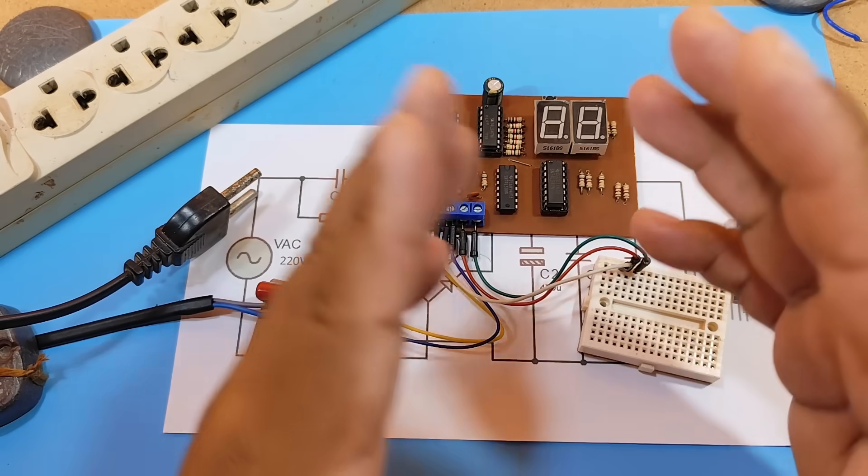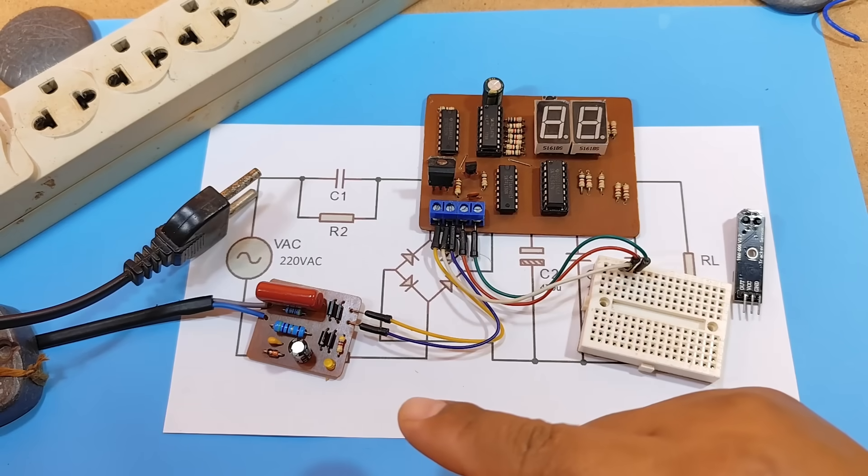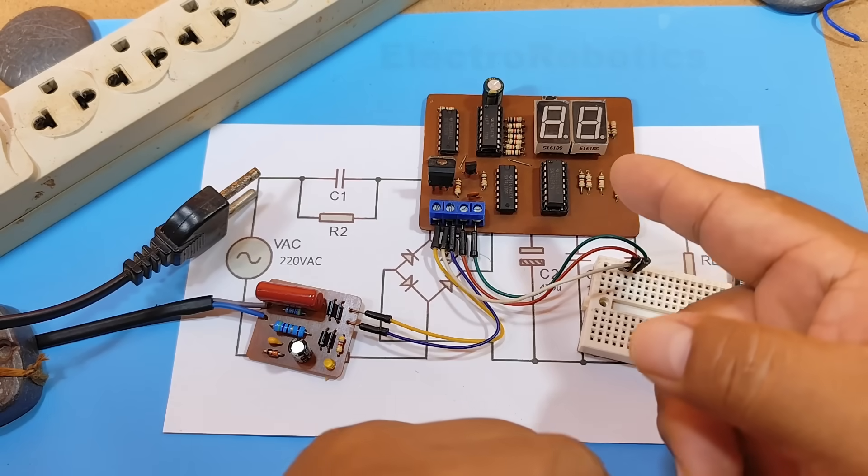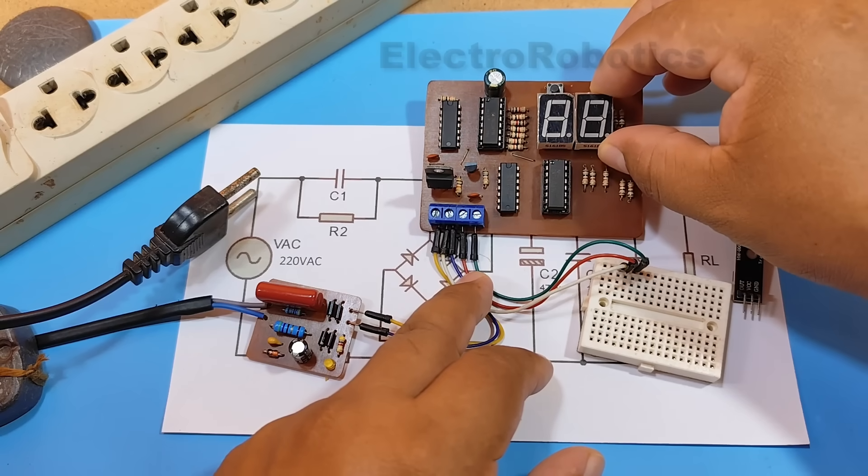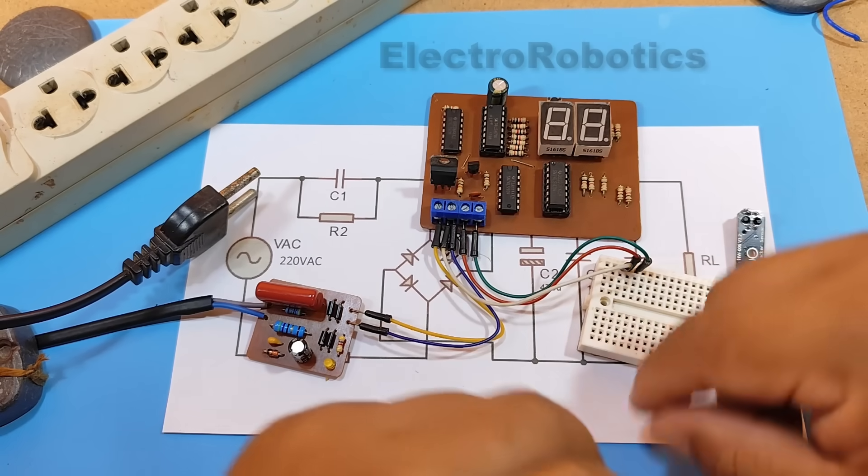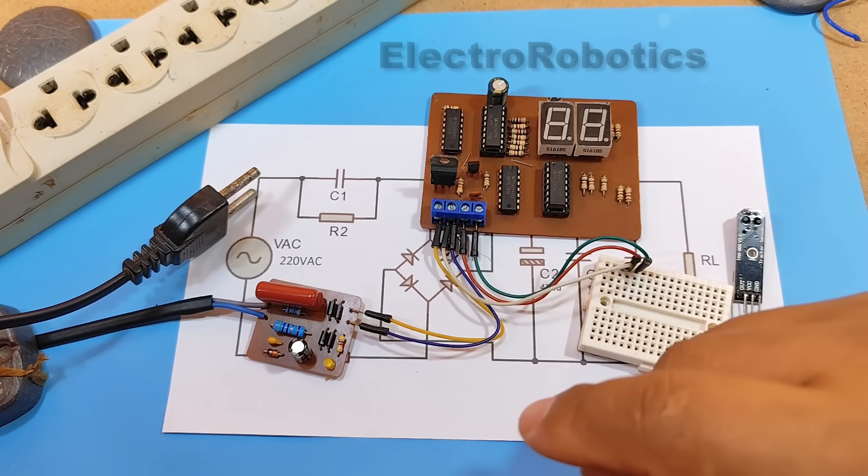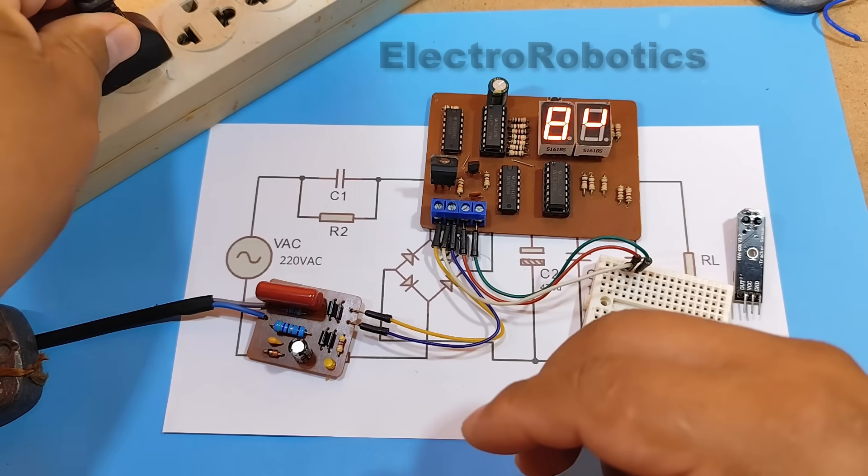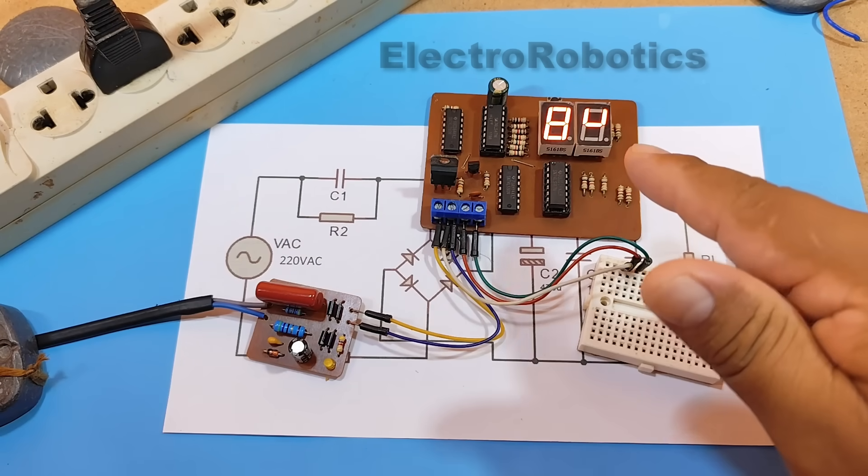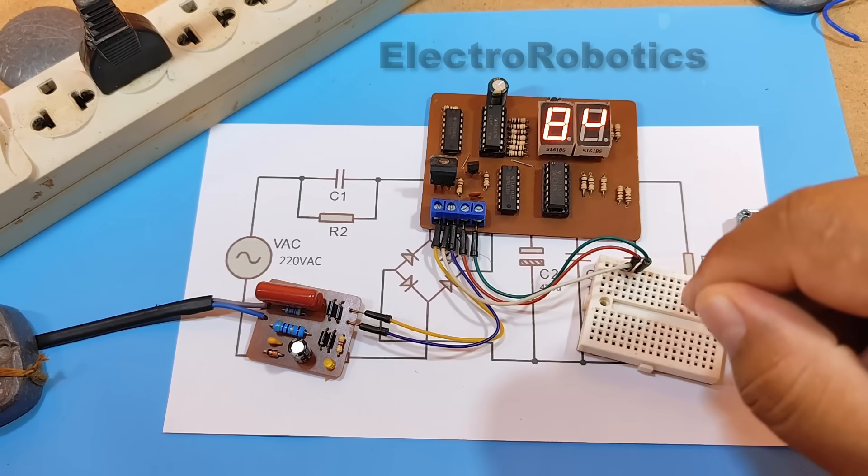Ok guys, now to finish, we're going to test our capacitive power supply on an electronic board, which you can see has several integrated circuits. We're going to connect our capacitive power supply to the power outlet. And as you can see, the electronic board has just turned on.